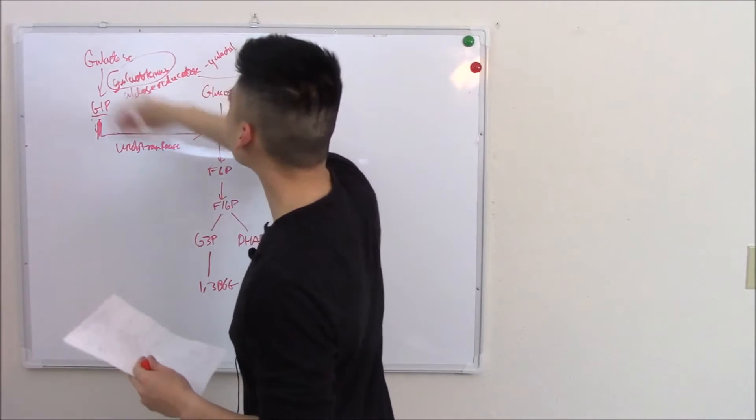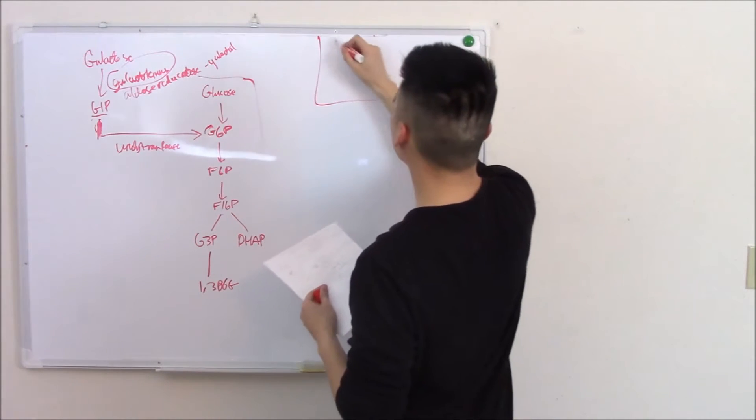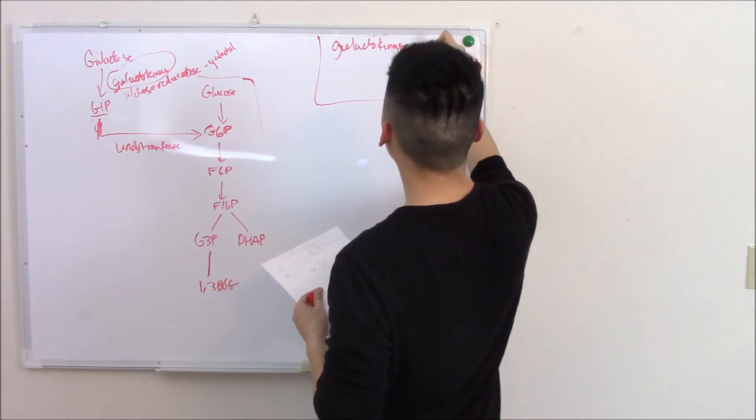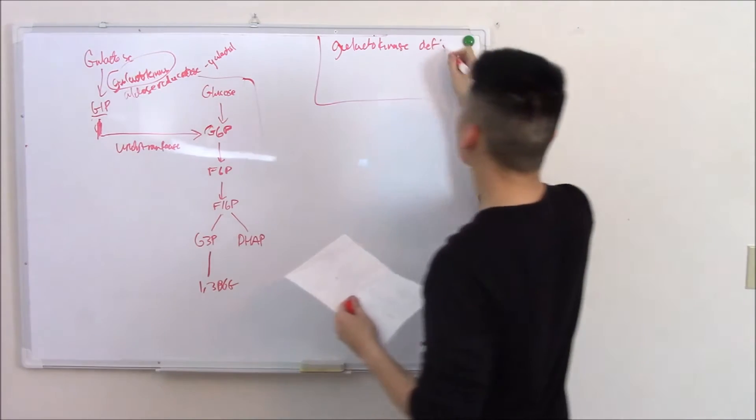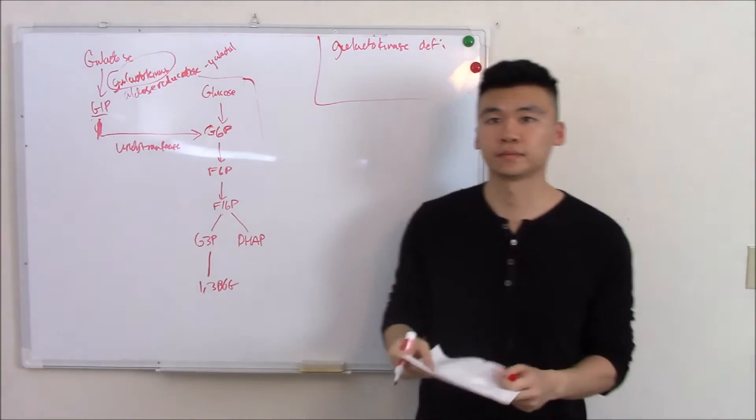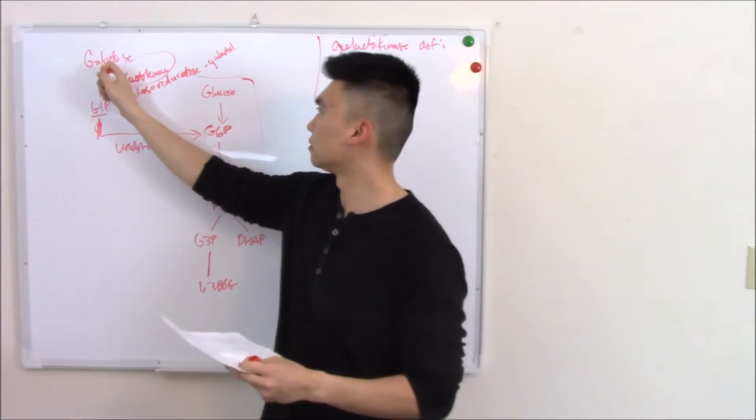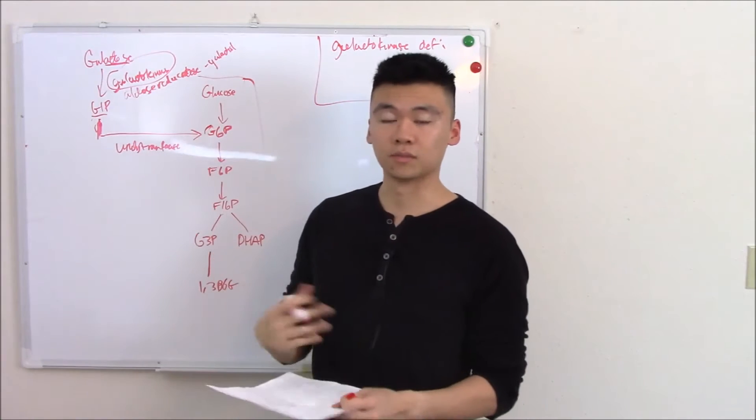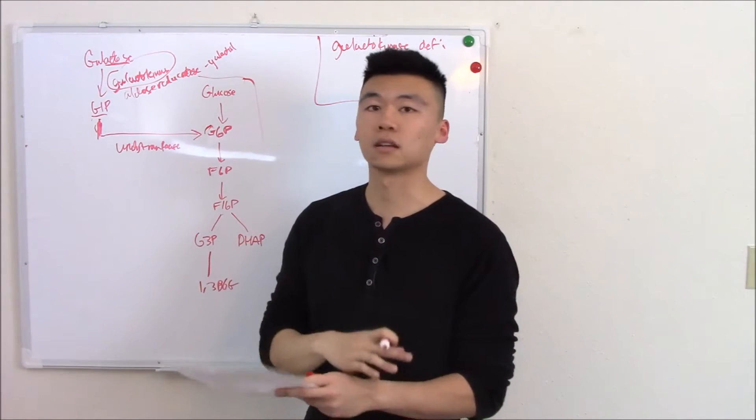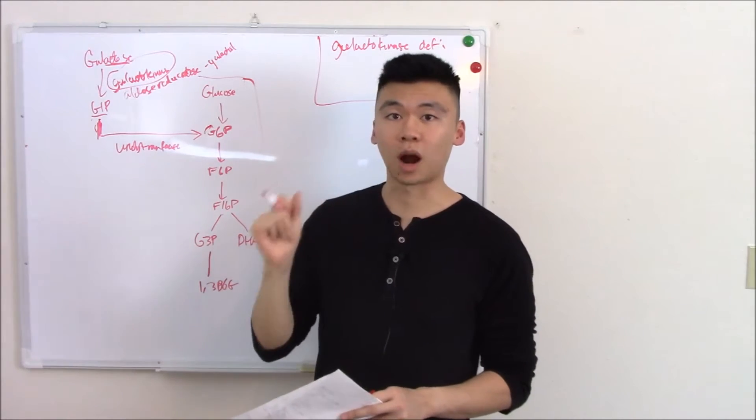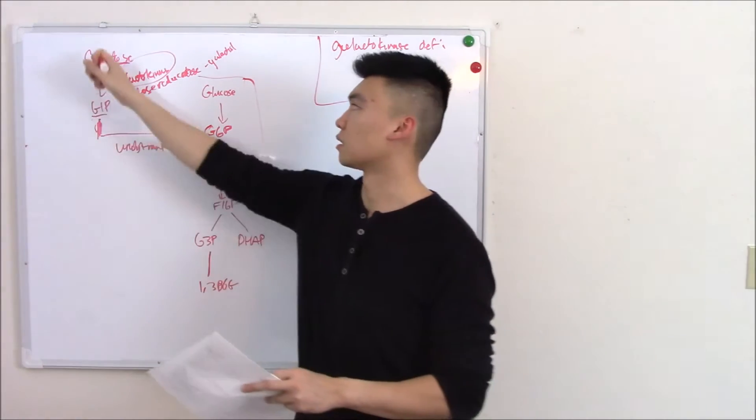You can have galactokinase deficiency. And this will appear immediately once you start feeding. Remember galactose and glucose makes lactose. Lactose is found in breast milk, found in formula. So as soon as that baby starts feeding they're going to have problems if they have something wrong with their galactose pathway.